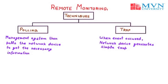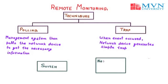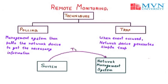To understand polling and trap, let us take the example of a switch and the NMS — NMS stands for Network Management System. Whenever the switch finds any error or event that has occurred in the remote location, it will inform the NMS regarding that event with the help of a trap message. The NMS will then gather information from the switch with the help of a poll message, which we call polling.